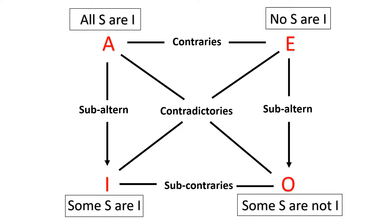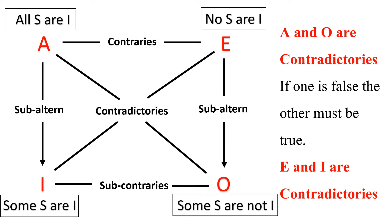Keeping this in mind, we are now going to look at the square of opposition — that is A, E, I, O. All you have to do is remember the following rules. Rule number 1: A and O are contradictory to each other, which means if one is false, the other must be true. In the same way, E and I are contradictory to each other.